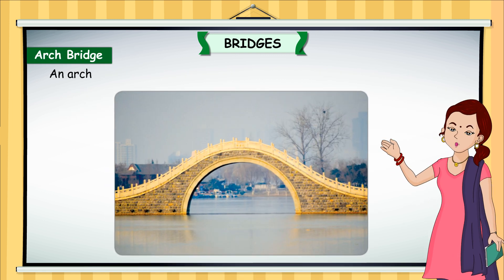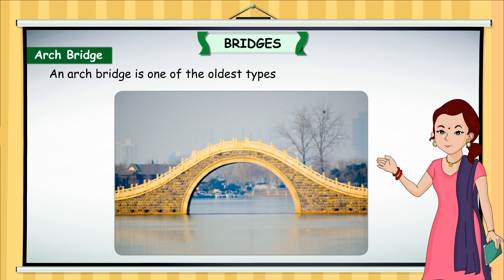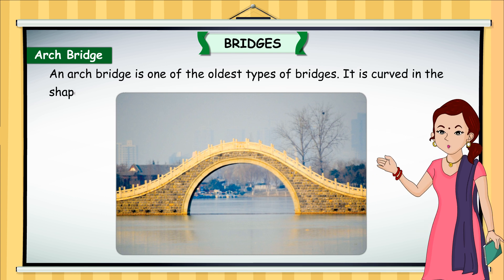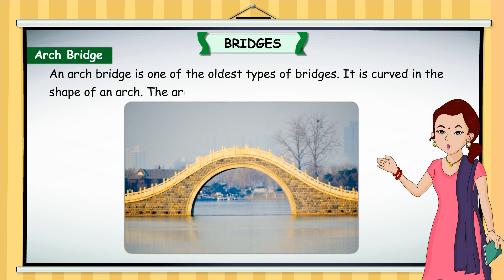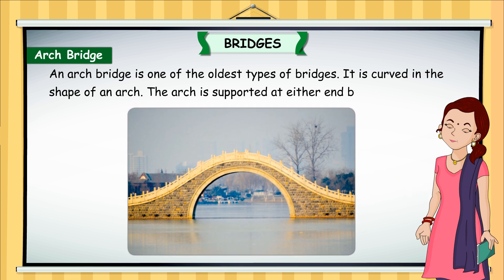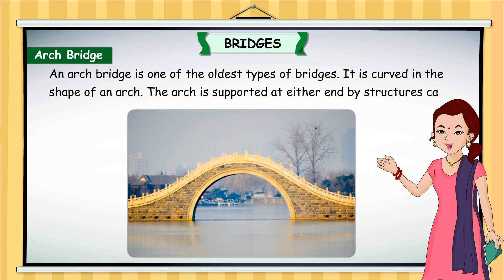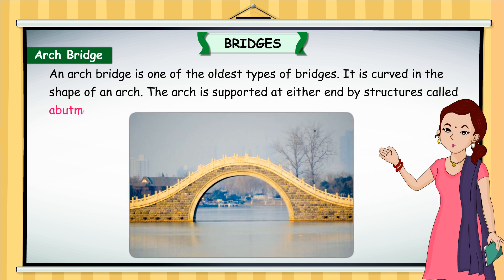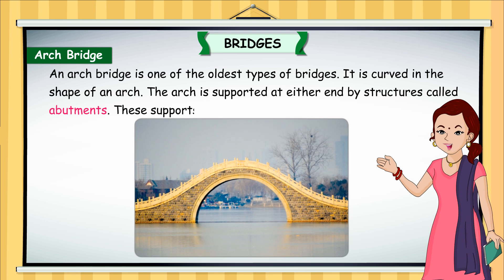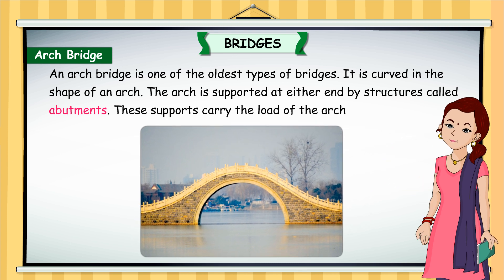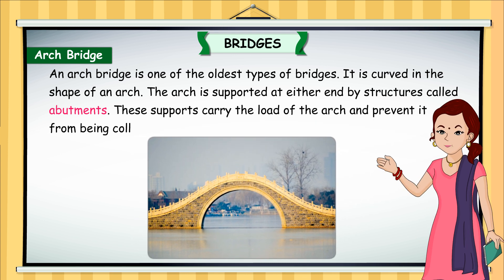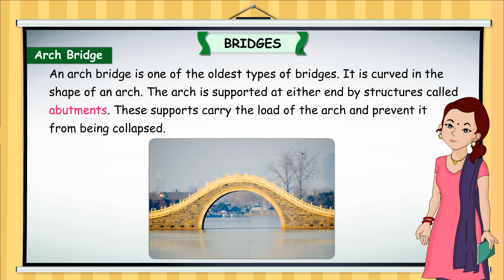An arch bridge is one of the oldest types of bridges. It is curved in the shape of an arch. The arch is supported at either end by structures called abutments. These supports carry the load of the arch and prevent it from being collapsed.